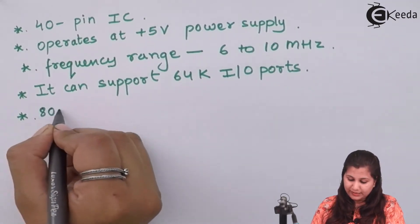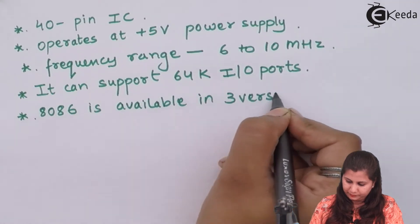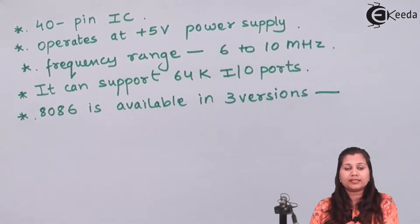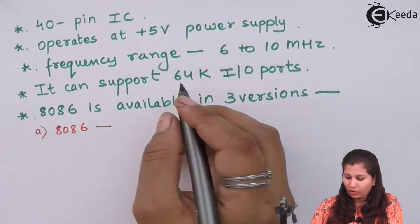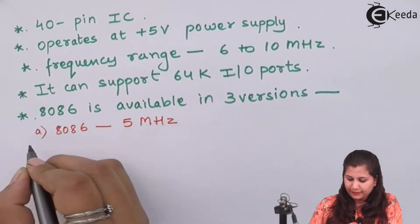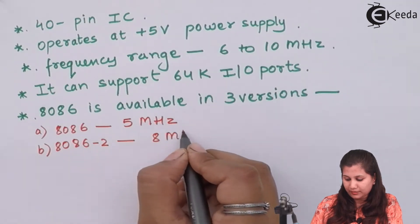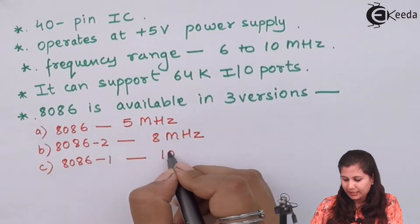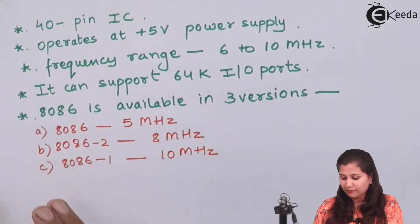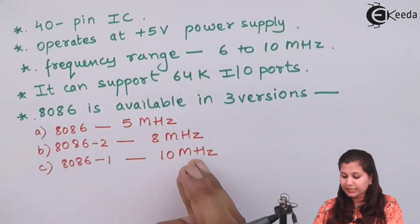The 8086 comes in three versions, and the difference between them is the frequency range. The first version, 8086, operates at 5 MHz. Then 8086-2 operates at 8 MHz. And 8086-1 operates at 10 MHz.